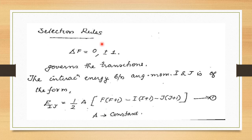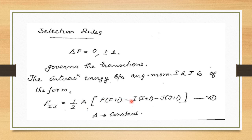The selection rule for hyperfine structure is Δf = 0 or ±1. The interaction energy between angular momenta i and j is E_ij = ½a[f(f+1) − i(i+1) − j(j+1)], where a is a constant. This is the interaction energy between the total angular momentum j of the electron and the spin angular momentum i of the nucleus.